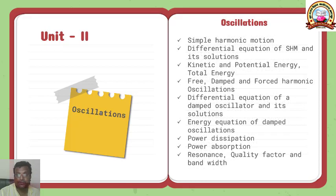In the second unit, we will see oscillations. In oscillation, we start with simple harmonic motion, differential equation of simple harmonic motion and its solution, kinetic energy and potential energy and total energy, then free damped forced harmonic oscillation, differential equation of damped oscillator and its solution, energy equation and damped oscillation, power dissipation, power absorption, resonance, quality factor and bandwidth. This is about your second unit.